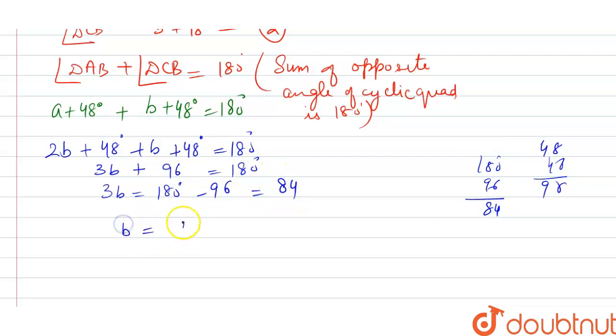So B is 84, divide by 3. 84 divided by 3 - 3 times 1 is 3, 3 times 2 is 6 - is 28. B equals 28 degrees. This is your answer.